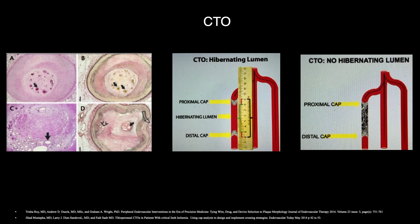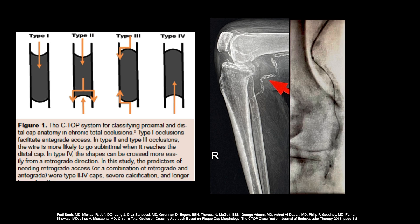An important classification when dealing with CTOs is the CTOP classification system, described by Fadi Sab and his team. It identifies four main types of CTO shapes based on their proximal and distal caps. Depending on whether you have a CTOP type 1, 2, 3, or 4, the morphology of the cap tells you whether your guide wire is likely to start intraluminal or subintimal, helping you determine which guide wires you may need. Heavy calcification and tortuosity also determine what type of guide wire you may need for PAD and critical limb ischemia patients.